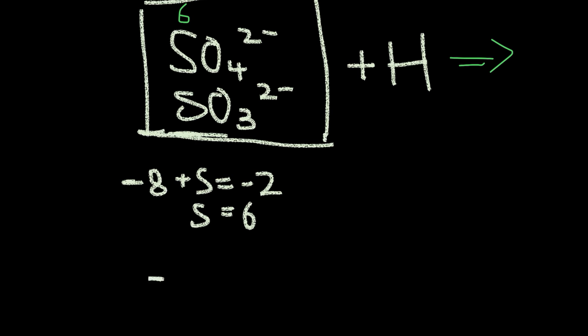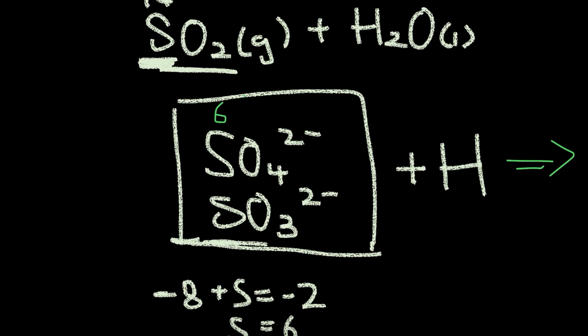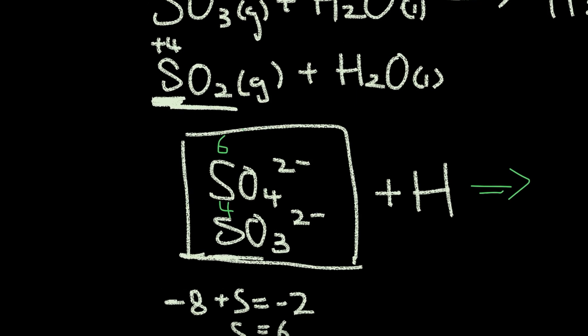Negative 2 times 3 is going to give us negative 6. Plus an unknown charge for sulfur is going to be negative 2. 6 minus 2, 4. So this one has a charge of 4. Which we see that these two match up together.